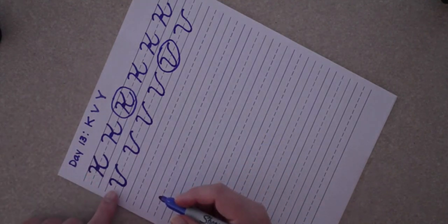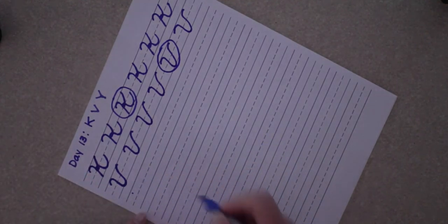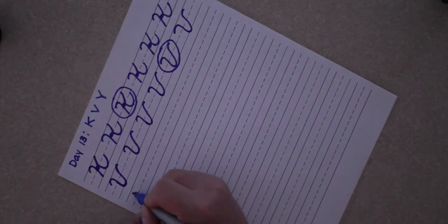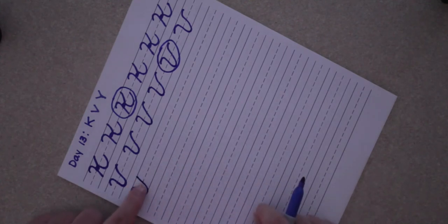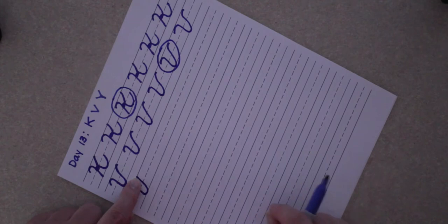For capital Y, we're going to start the exact same way as we did with our K and our V, just a little bit below the top line. You're going to come around with the same motion you did for the V. You're going to come all the way up but you're going to stay straight right there. This stays straight. Notice it doesn't turn out like that because you're not finished.